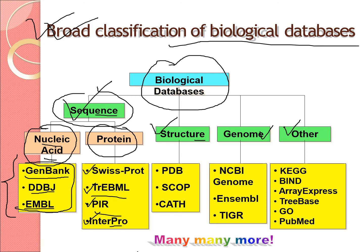For structure-based classification, important databases include PDB, SCOP, and CATH. Under genome databases, there are NCBI Genome, Ensembl, TIGR, and pathway databases like KEGG, as well as BIND, ArrayExpress, TreeBASE, GO, and PubMed. I'll be explaining each of these in coming videos, so stay tuned. Thank you for watching.